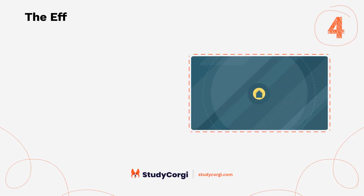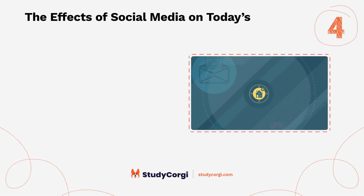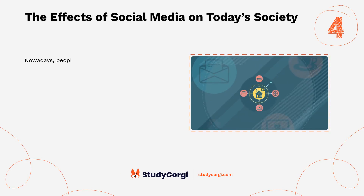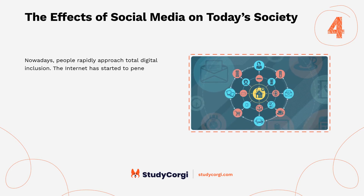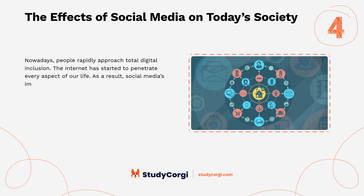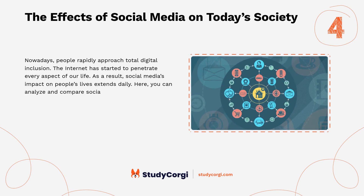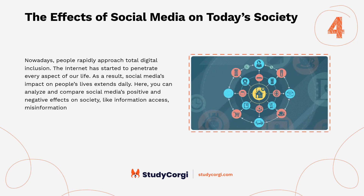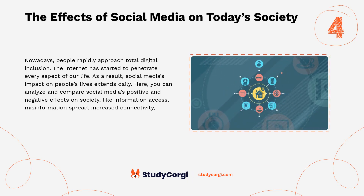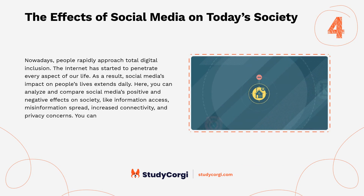The effects of social media on today's society. Nowadays people rapidly approach total digital inclusion, and the internet has started to penetrate every aspect of our life. Here you can analyze and compare social media's positive and negative effects on society, such as information access, misinformation spread, increased connectivity, and privacy concerns. You can also study how social media shapes cultural norms and values.